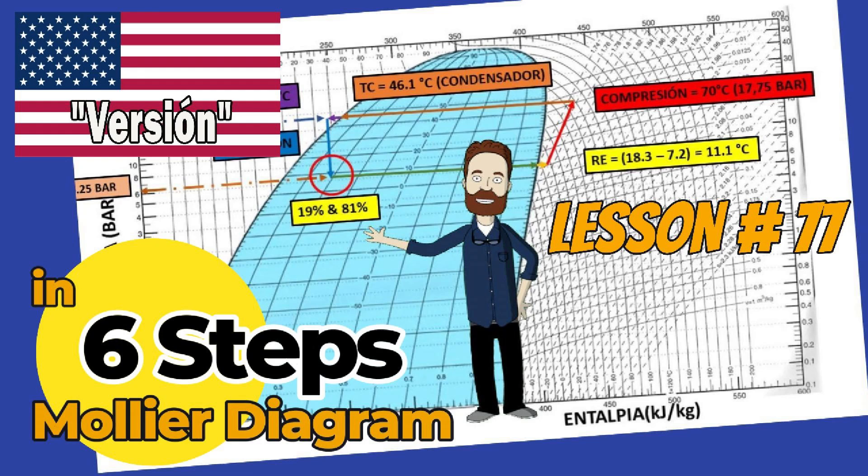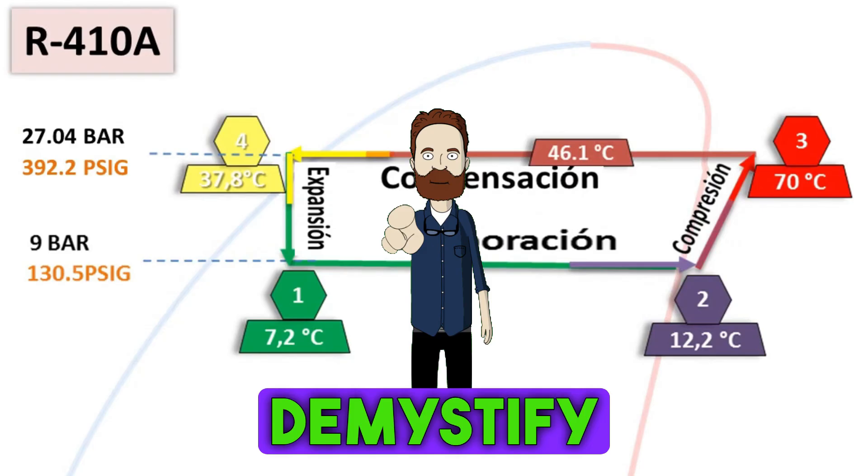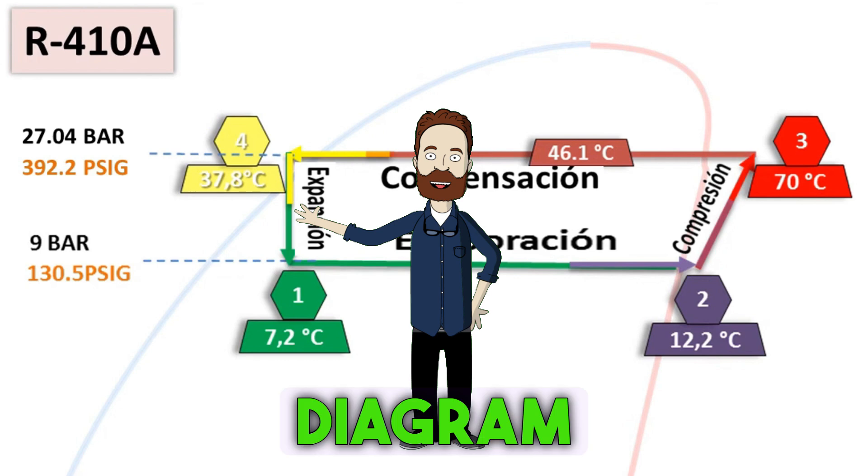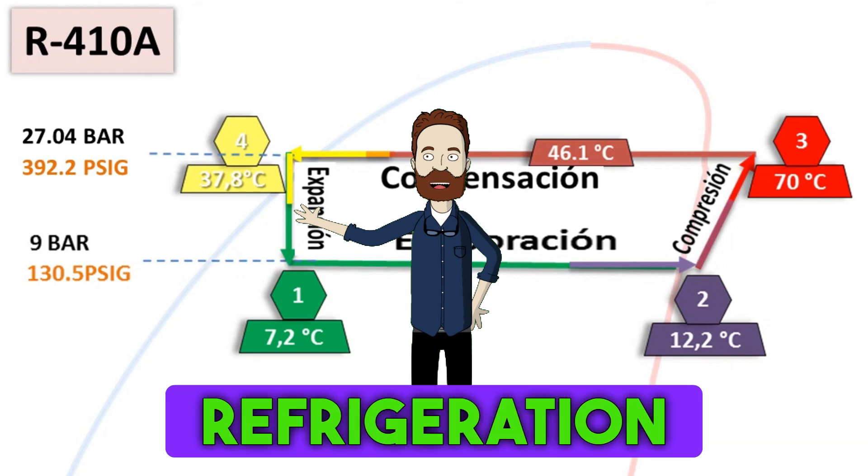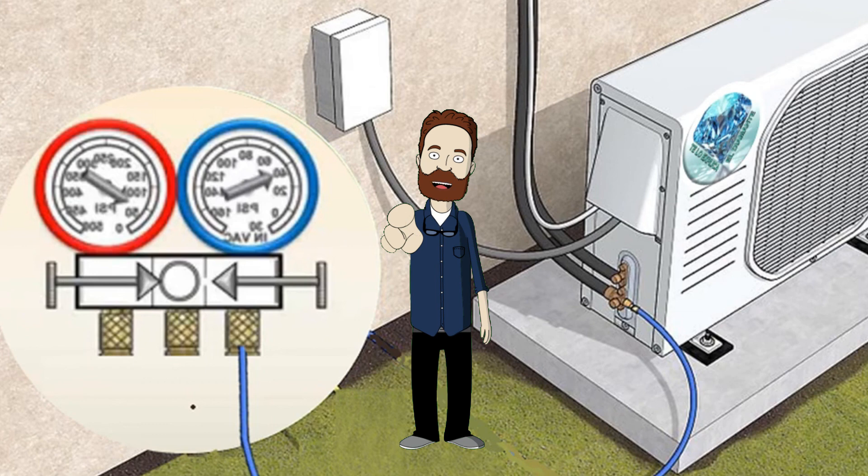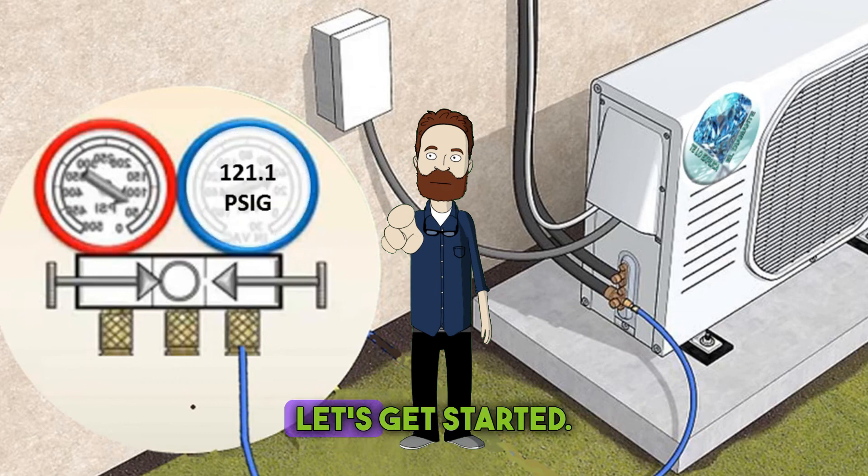Hello and welcome. In this lesson, we're going to demystify the Moliere diagram and learn how to plot it in just six steps. This diagram is essential for understanding refrigeration and air conditioning systems. So, without further ado, let's get started.